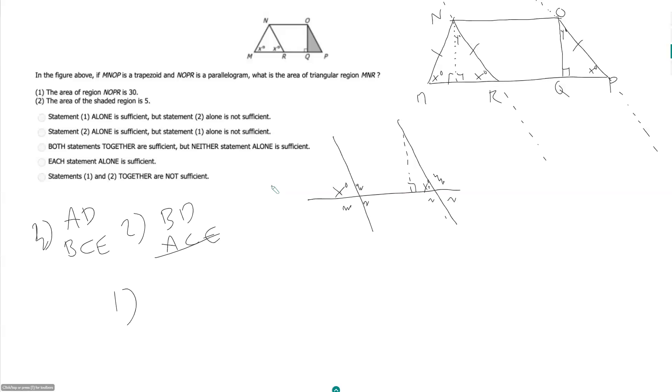Statement one, the area of region NOPR, so that's the parallelogram, is 30. So is that helpful at all? Not really, because how do you find the area of a parallelogram? It really is just based on height. So we would have to know what this guy is, Z, and its base would be PR.